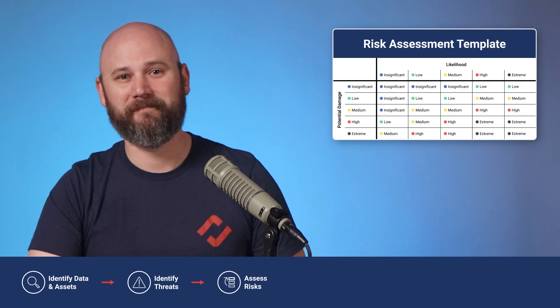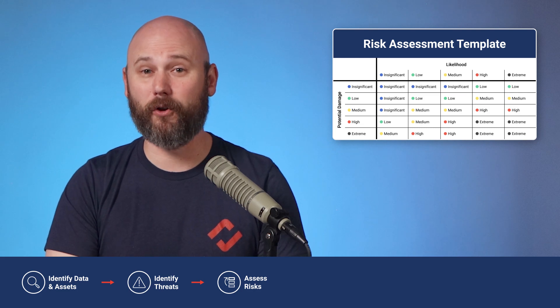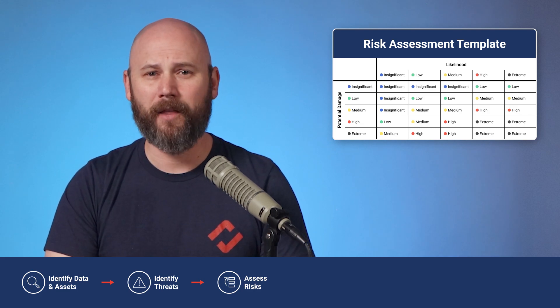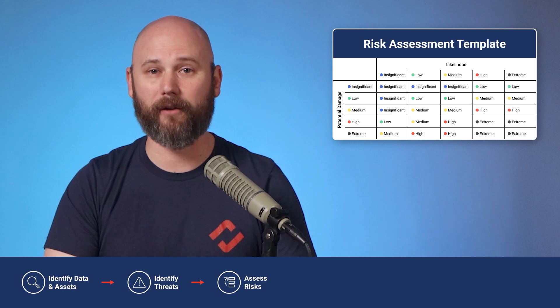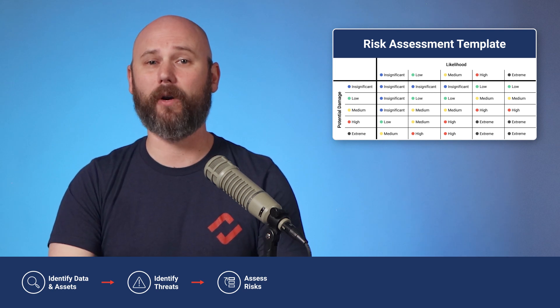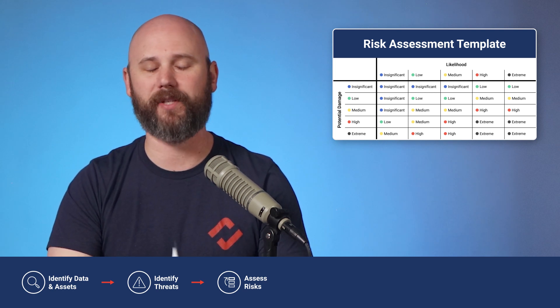Now that you have a list of threats, you will need to assess the risk. You can assess the nature of two factors: likelihood and potential damage. For example, the likelihood of a successful phishing attack is fairly high, and depending on the circumstances, the damage could also be high. Using tables like this one to assess the risk of your threats is super helpful — it takes the guesswork out of the process and helps you prioritize which threats are most impactful.